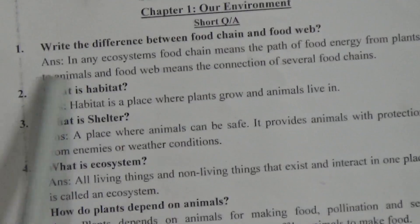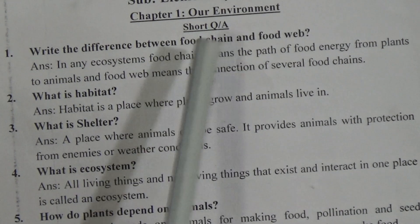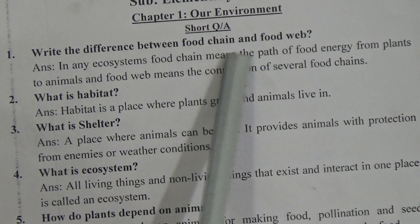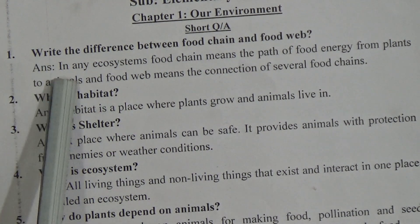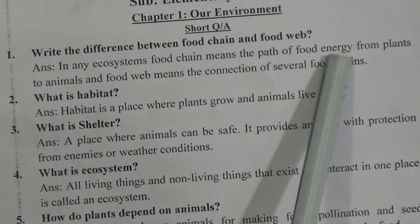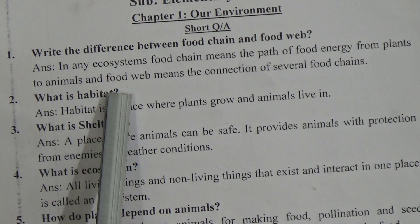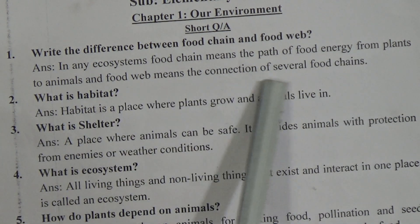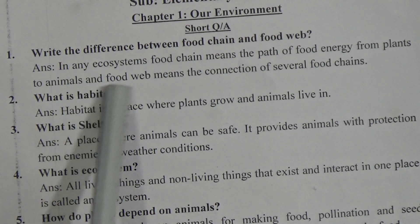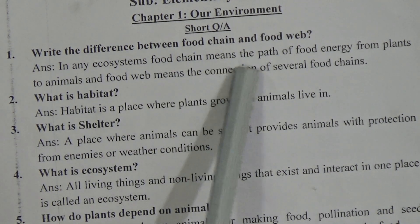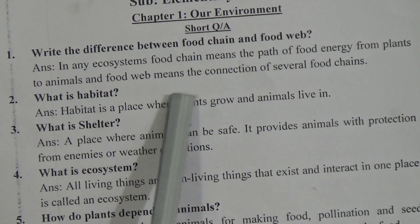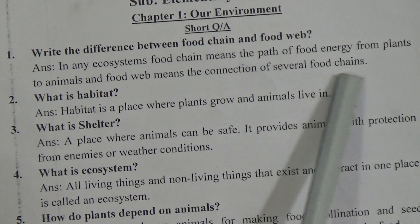Short question number 1: Write the differences between food chain and food web. Answer: In any ecosystem, food chain means the path of food energy from plants to animals, and food web means the connection of several food chains.